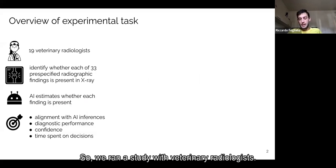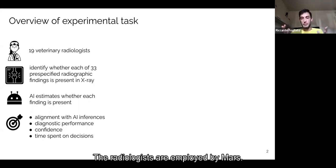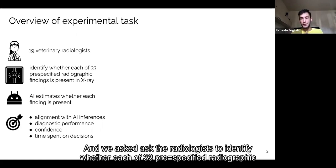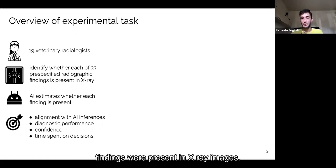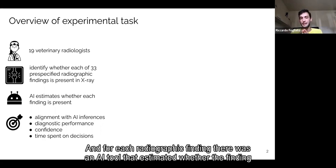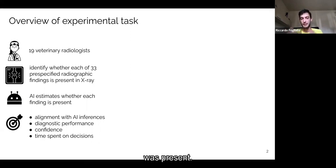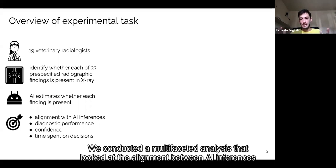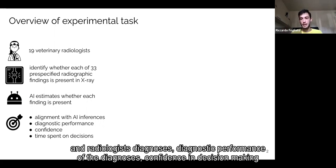We ran a study with veterinary radiologists. The radiologists are employed by Mass, and we asked the radiologists to identify whether each of 33 pre-specified radiographic findings are present in X-ray images. For each radiographic finding, there was an AI tool that estimated whether the finding was present. We conducted a multi-faceted analysis that looked at the alignment between AI inferences and the radiologist diagnosis, diagnostic performance, confidence in decision-making, and time spent on decisions.